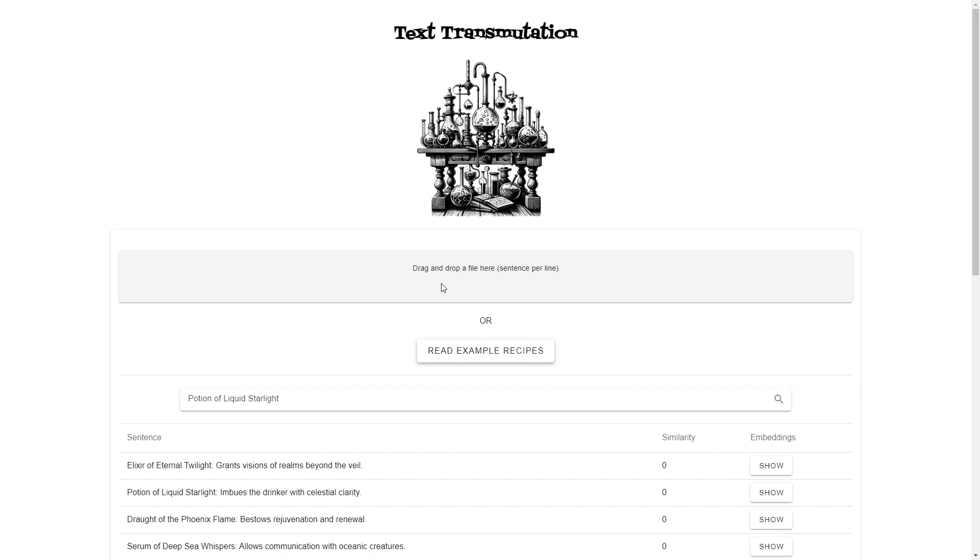Now we are ready to implement search. For provided text we calculate embedding and search the recipe from the list that matches the best.